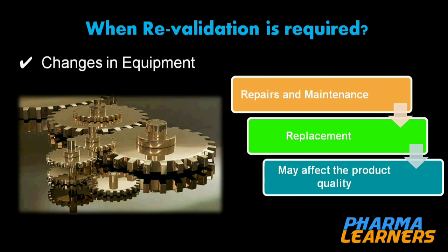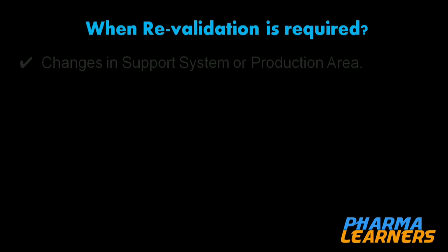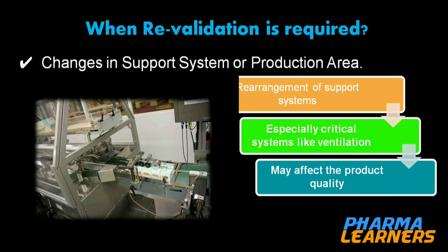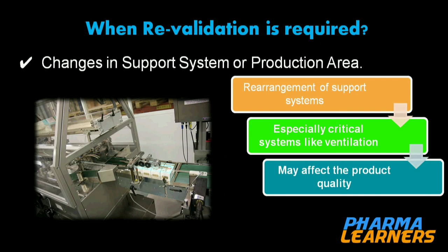The fifth example: change in support system or production area. Sometimes rearrangements of the support system or production area may also affect product quality, especially if you are making any change to the ventilation system or HVAC system.